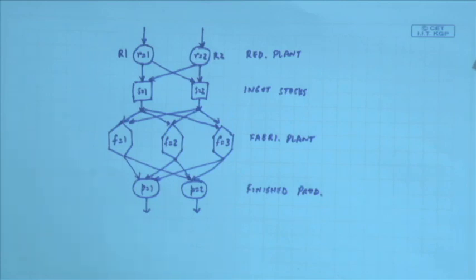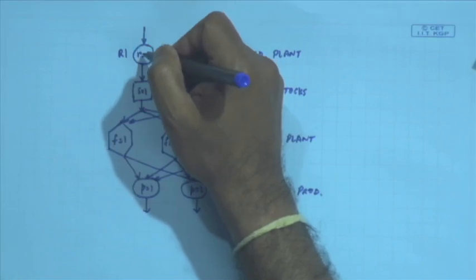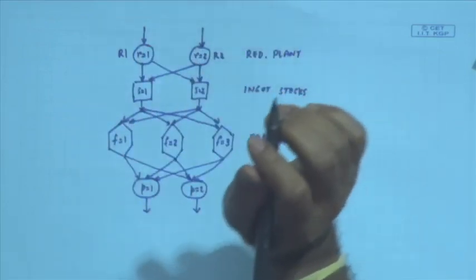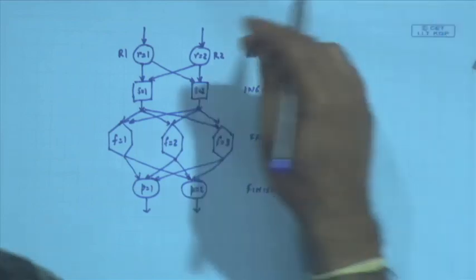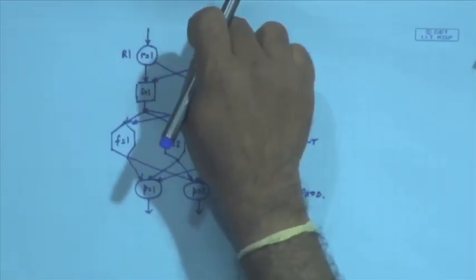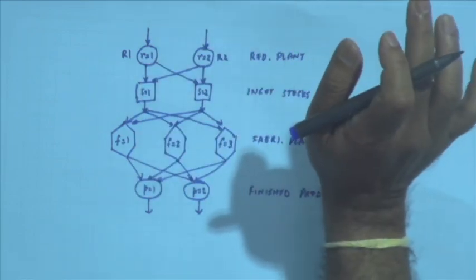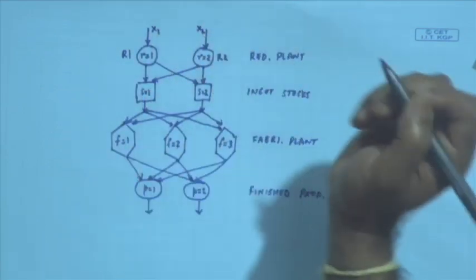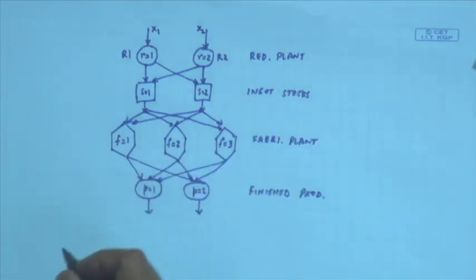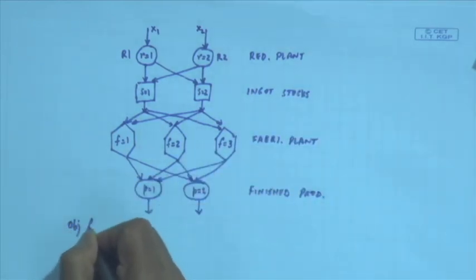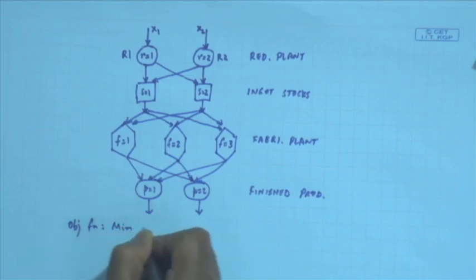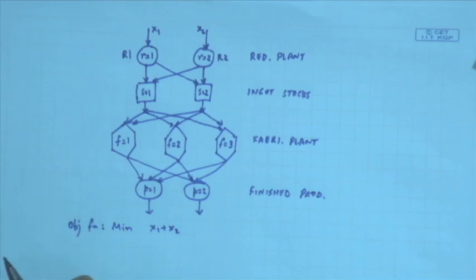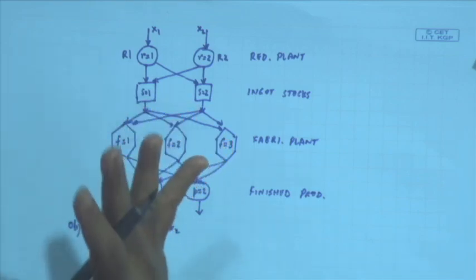For the coming season the company wants to minimize the total tonnage of iron ore processed in its reduction plants. So what is the iron ore processed — the total coming to R₁ and total coming to R₂ — I do not know how much that is. I need to minimize the total sum. I can assume x₁ is being sent to R₁ and x₂ is being sent to R₂, because these are the things I do not know. What is my objective function? Minimize x₁ + x₂.